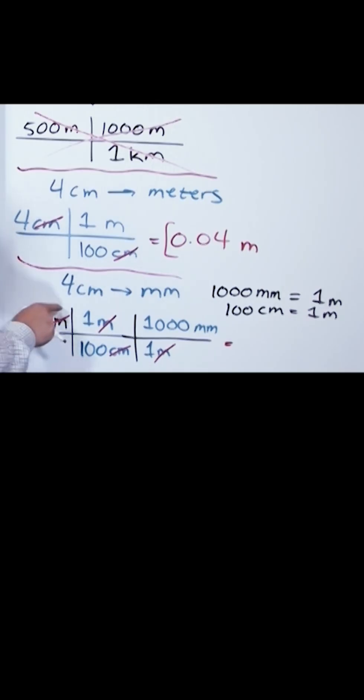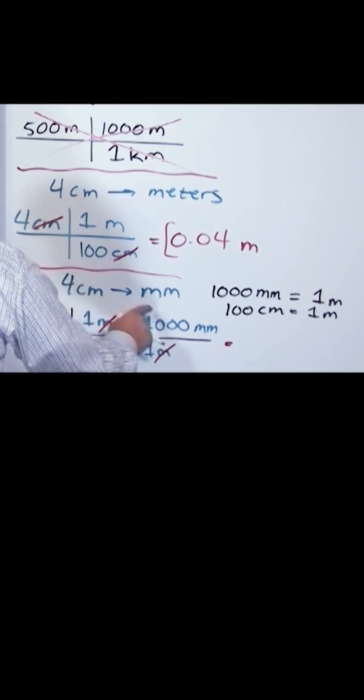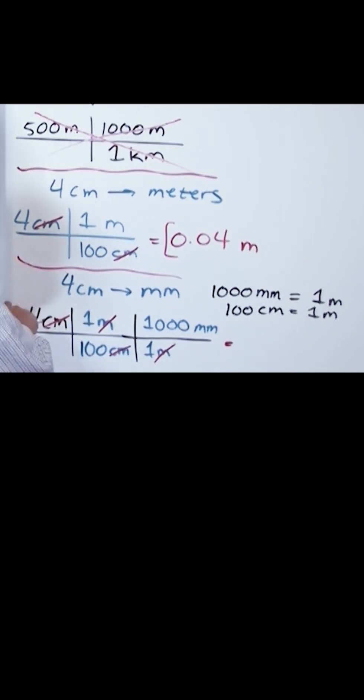So you've canceled the centimeters, you've canceled the meters, all you have left is millimeters. Four times one gives you four, four divided by a hundred, take that, multiply by a thousand, divide by one. So basically what you're doing is everything is multiplied together in the top and then you divide by everything on the bottom.